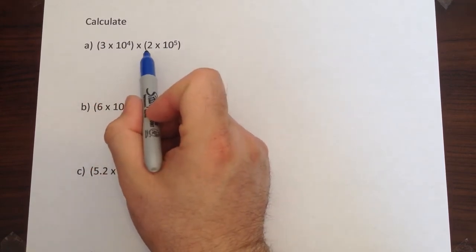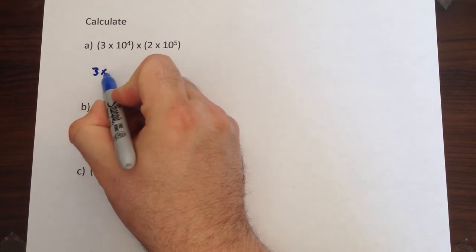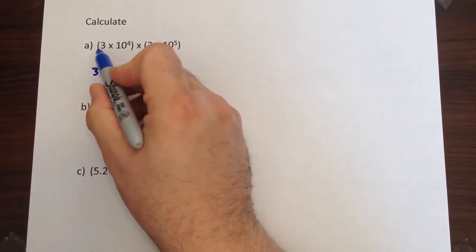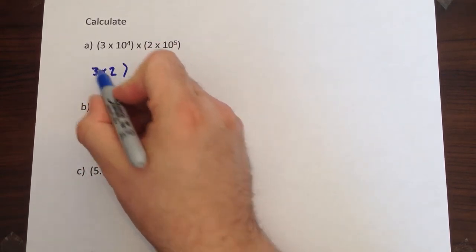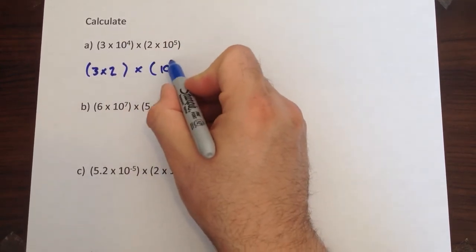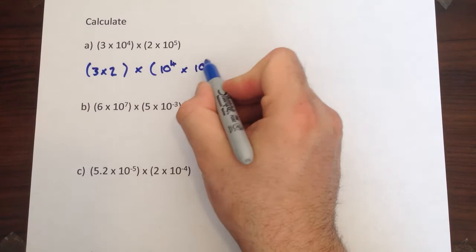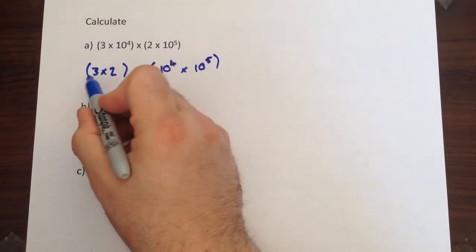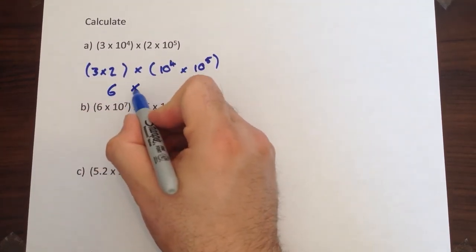To do this calculation here you would do 3 multiplied by 2 separately. That's going to be your first part of your answer. And the second part of your answer is going to be 10 to the power of 4 multiplied by 10 to the power of 5. 3 times 2 is 6, fairly straightforward.